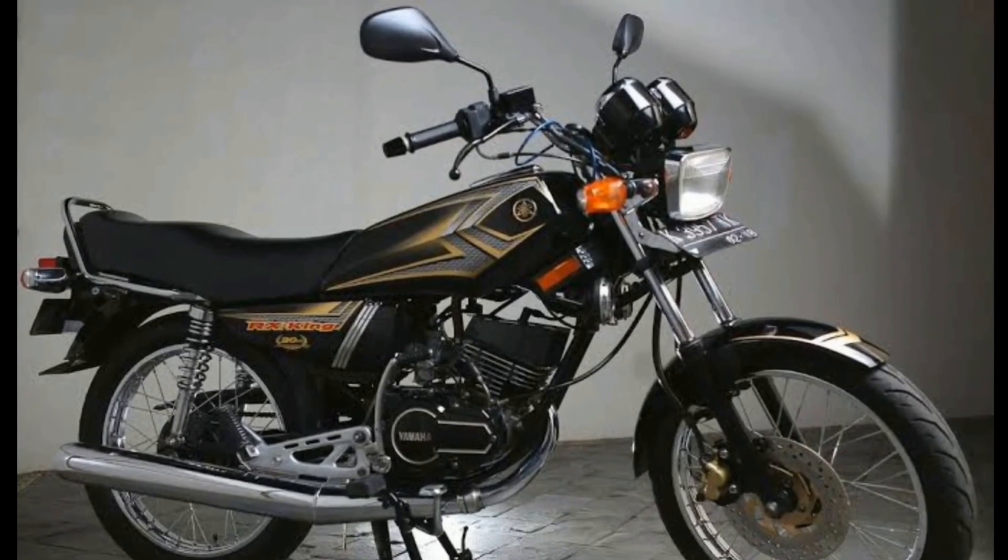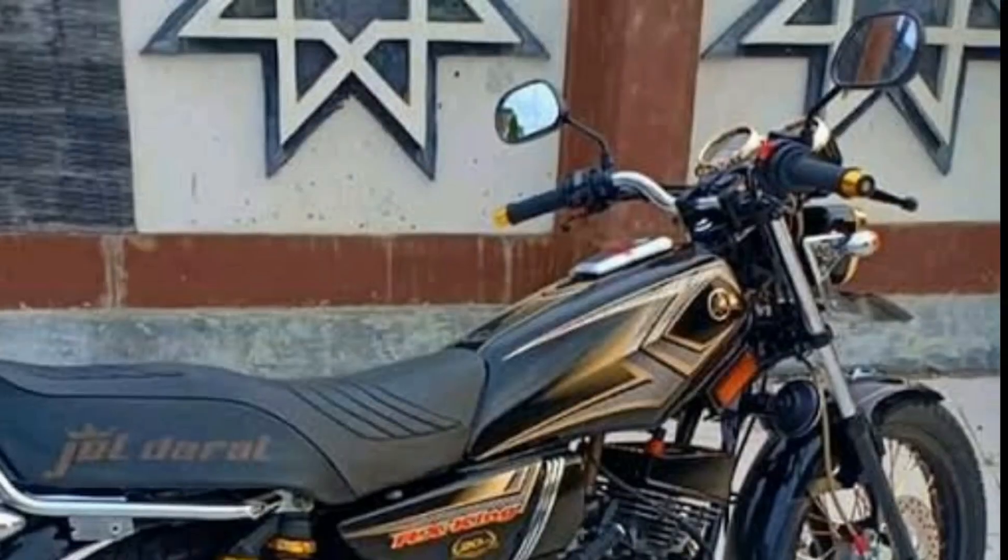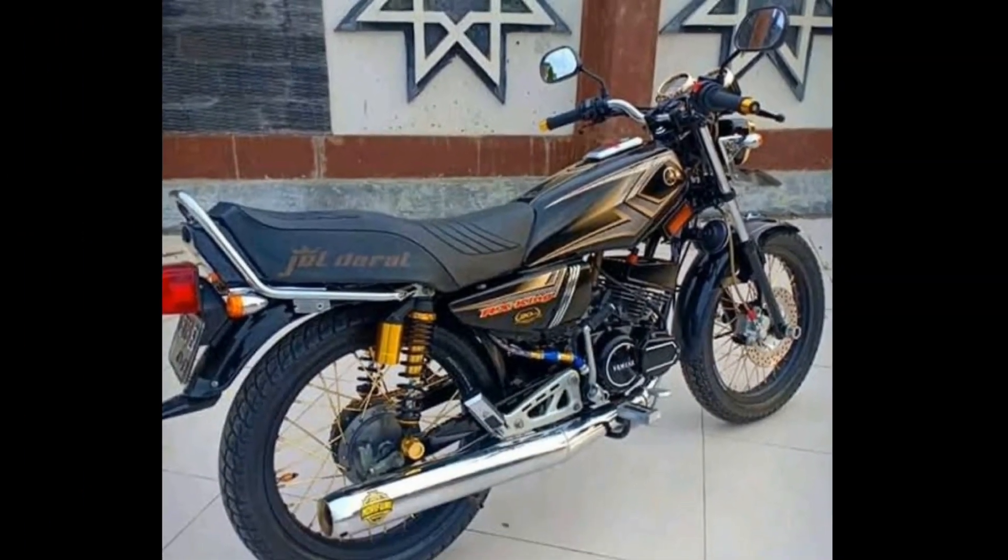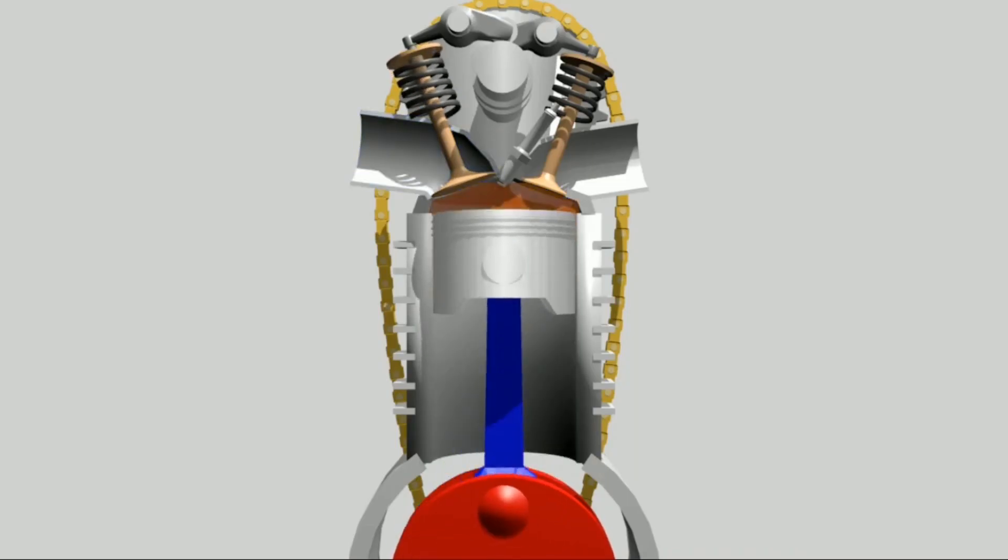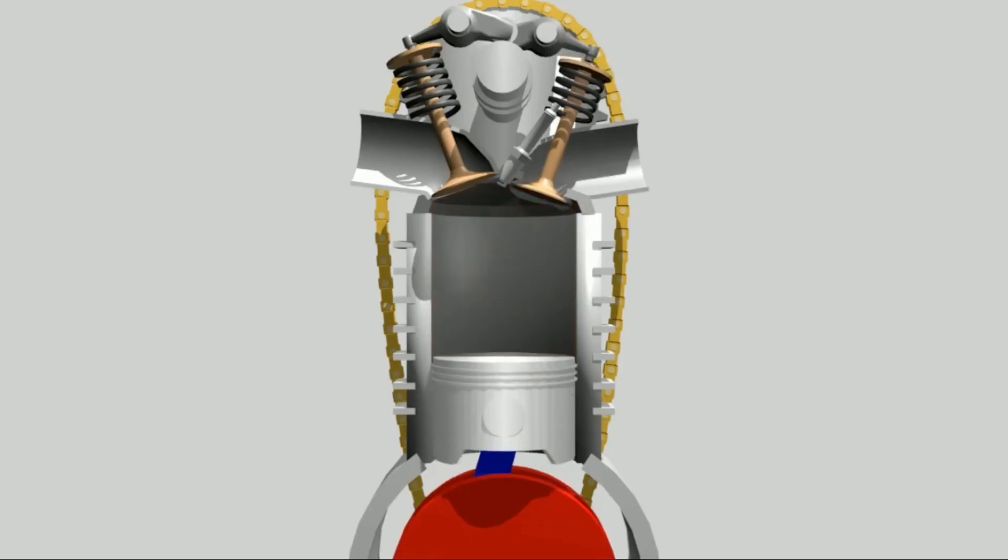One of the well-known types of internal combustion engine is two-stroke engine. This type was widely used on motorcycles before four-stroke engines were popular. Then how does the two-stroke engine work? See the following animation.